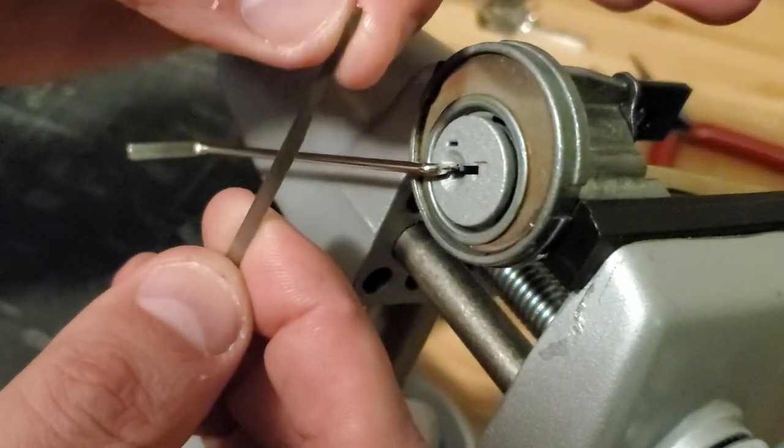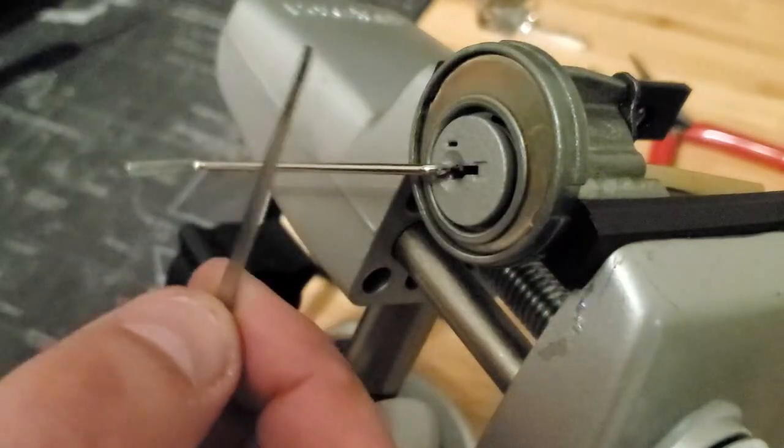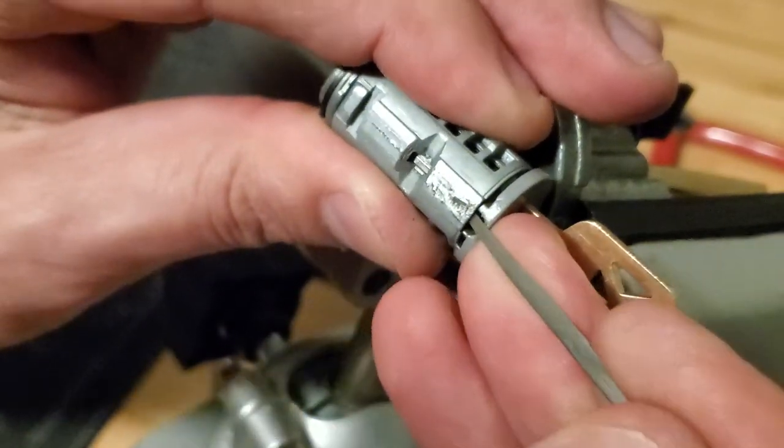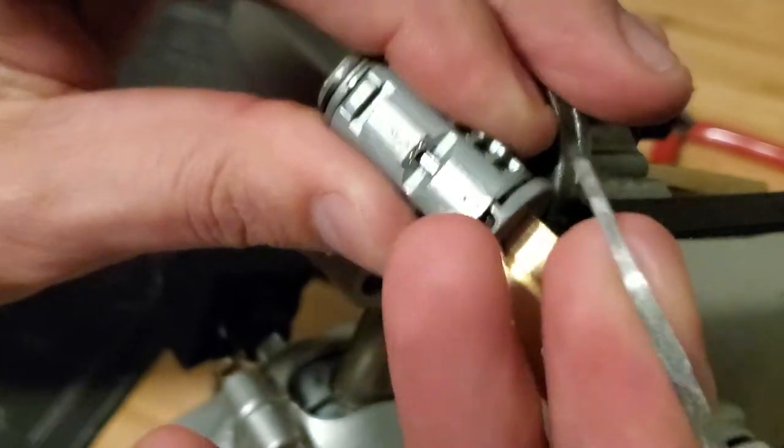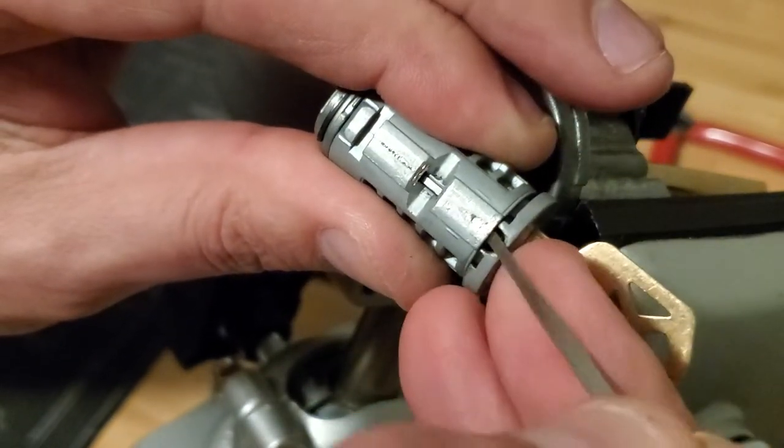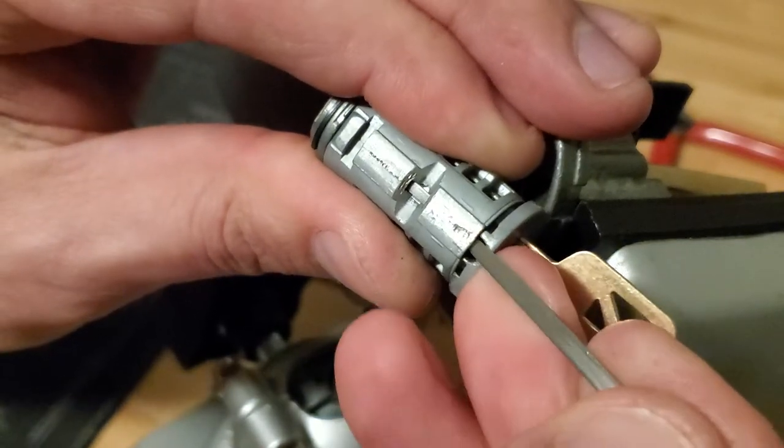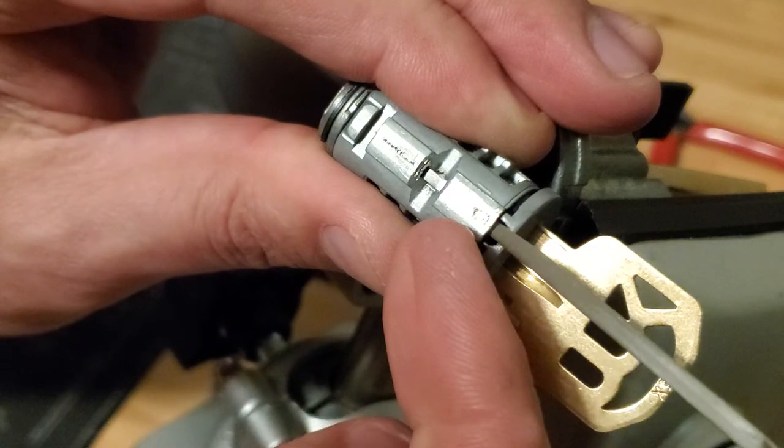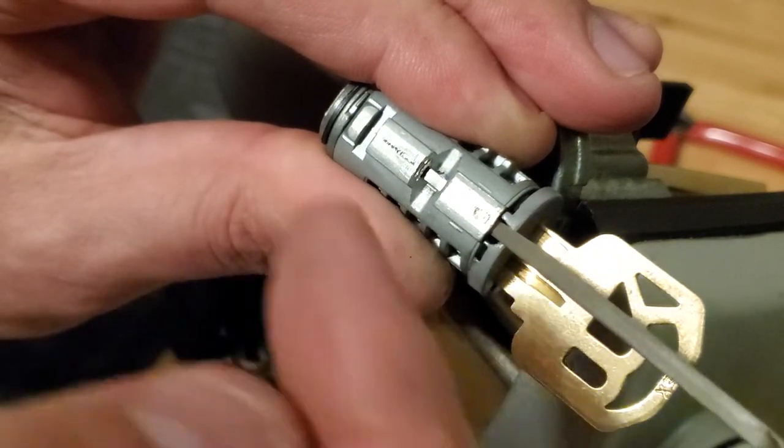So the biggest struggle for me was to get this tool correct, to get this thinned out to the right width so it would fit into this channel. And then also you want to get it so that you have just enough upturn on the tip that when it gets through, you can go into that second half so that you can pressure the full sidebar. And then you're putting full pressure on the sidebar, and once the pin sets, the sidebar will drop.